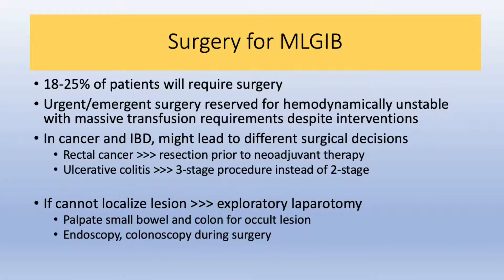Surgery is needed for massive lower GI bleeds in about 18-25% of patients. Urgent or emergency surgery is reserved for hemodynamically unstable patients with massive transfusion requirements despite interventions, and for patients who continue to bleed despite multiple interventions. In the setting of cancer or inflammatory bowel disease, different surgical decisions may apply — for example, a patient with rectal cancer might need resection prior to neoadjuvant therapy, or a patient with ulcerative colitis may warrant a three-stage rather than two-stage procedure.